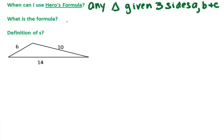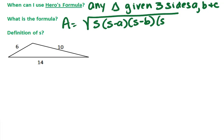What is the formula? It is the radical of S times quantity S minus A, S minus B, S minus C.